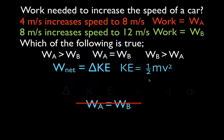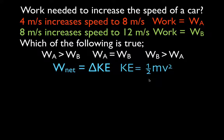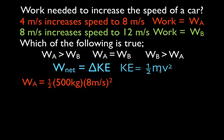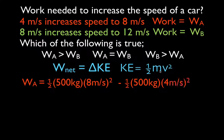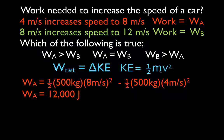We actually have to calculate the change in kinetic energy for each situation. For situation A, the change in kinetic energy is final minus initial: one-half times 500 times 8 squared, minus one-half times 500 times 4 squared. The work required to increase the car's speed from 4 to 8 meters per second is 1,200 joules.